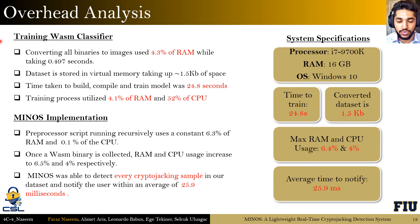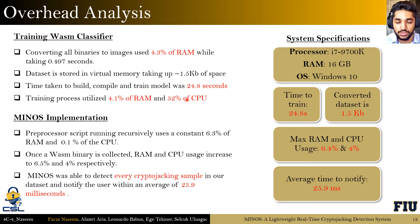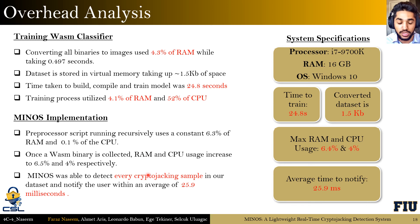For the overhead analysis, the system specifications are: an Intel Core i7 processor, 16 GB RAM, and Windows 10. Training the WebAssembly classifier used 4.3% of RAM and took 0.5 seconds; once converted to images, the dataset was stored in virtual memory taking only 1.5 KB. The model training time was 24.8 seconds, utilizing a maximum of 4.1% RAM and 52% CPU. With the Minos implementation running, the preprocessor script in the background uses a constant 6.3% RAM and 0.1% CPU. Once a WebAssembly binary is collected, RAM and CPU usage increase slightly to 6.5% and 4% respectively, and Minos detected every cryptojacking sample on average in 25.9 milliseconds.